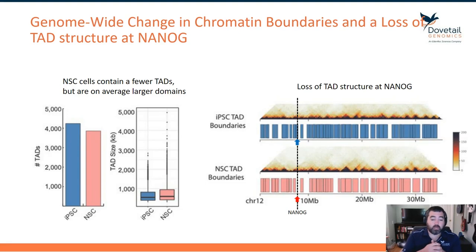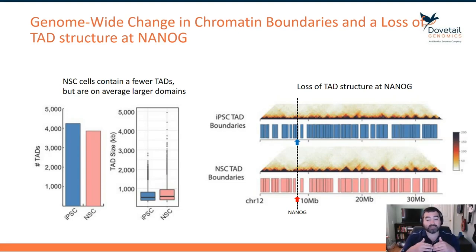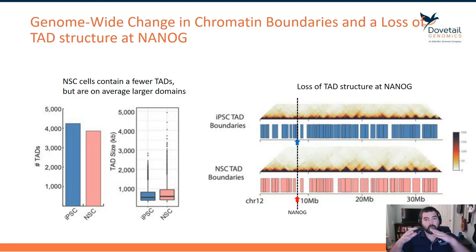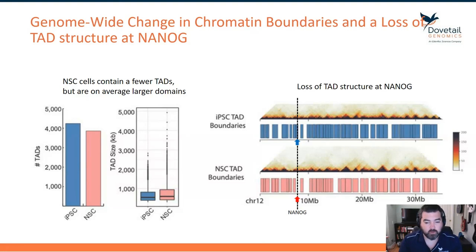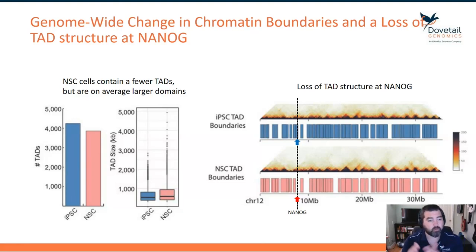So while NSC sees TAD numbers go down, the actual TAD sizes increase. You're getting bigger clusters that encapsulate more linked-function genes within a domain, where that interactome is going to be more frequent than in the iPSC, which has smaller, more broken-down TAD structures.